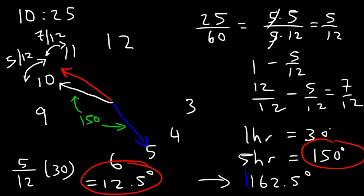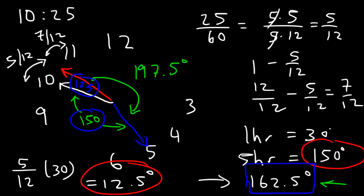So that is the shorter angle between the hour hand and the minute hand when the clock says 10:25. By the way, if you want to find the longer angle, it's simply 360 minus this answer. So 360 minus 162.5 will give you the other angle of 197.5. And keep in mind, this is 12.5 on the inside. So all three of these angles have to add up to 360.